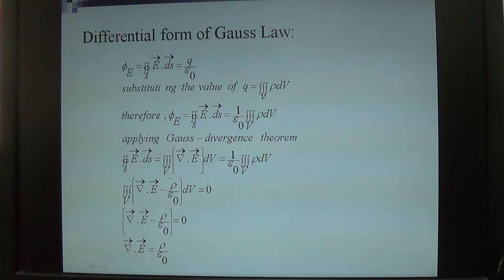Now you can compare both sides. Here is volume integral divergence of E dV, and this is 1 upon epsilon naught rho dV. So by equating both sides, you observe that volume integral divergence of E minus rho upon epsilon naught dV equals zero.